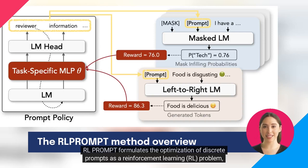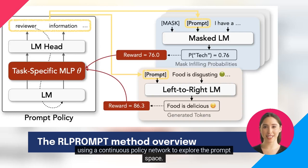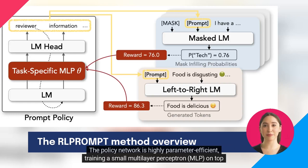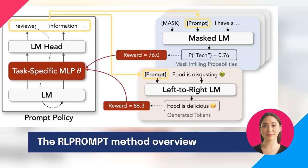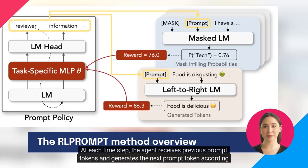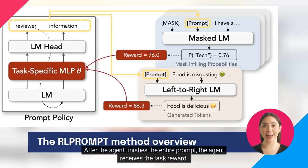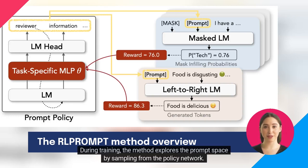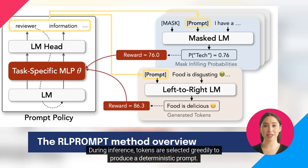RL Prompt formulates the optimization of discrete prompts as a reinforcement learning, RL, problem, using a continuous policy network to explore the prompt space. The policy network is highly parameter efficient, training a small multilayer perceptron, MLP, on top of a frozen language model. At each time step, the agent receives previous prompt tokens and generates the next prompt token according to a policy. After the agent finishes the entire prompt, it receives the task reward. During training, the method explores the prompt space by sampling from the policy network. During inference, tokens are selected greedily to produce a deterministic prompt.